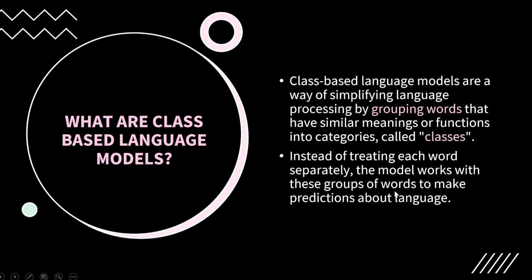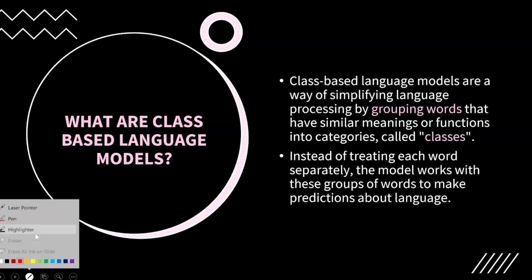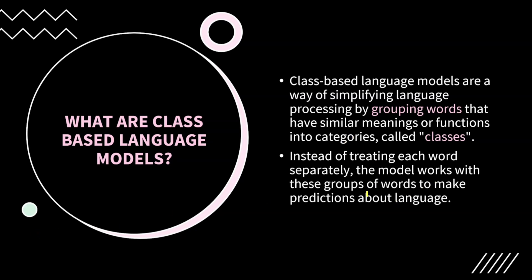Instead of treating each word separately, the model works with these groups of words to make predictions about language. When the computer is asked to predict the next word, it considers all possible words in the vocabulary. But if you maintain a separate class for separate types of words, it makes the computer's task easier to predict the next word.